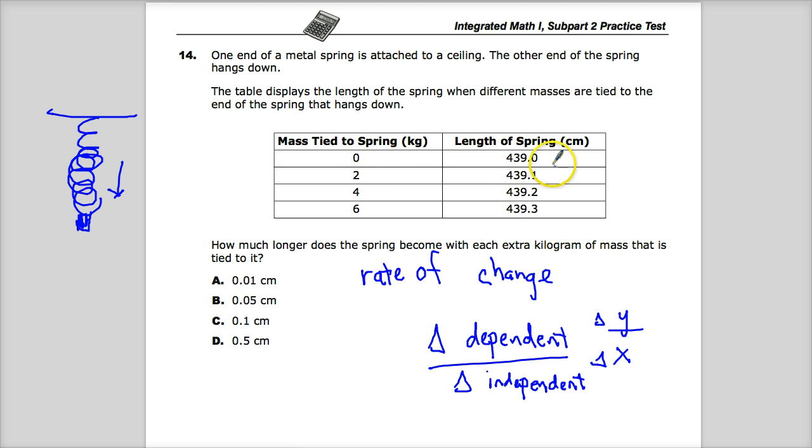This one's a little tricky because it's really easy to see that the change is 0.1 each time. Yeah, it's 0.1. But over here, they're changing 2 every time. That's where they get you. They want you to jump on C as the choice to ride home with. But don't fall for their tricks.